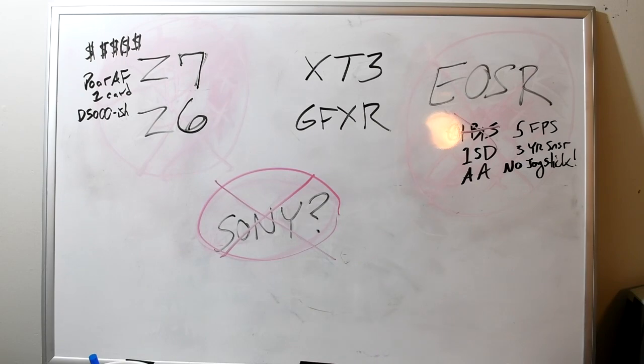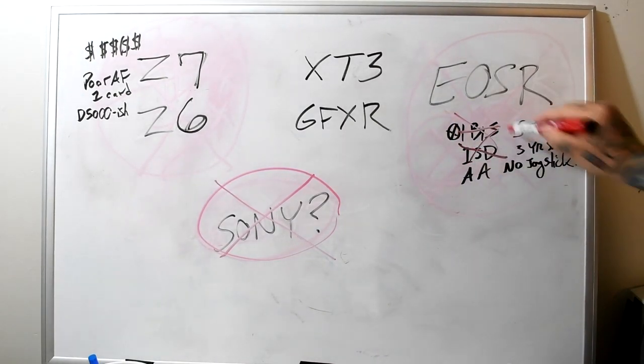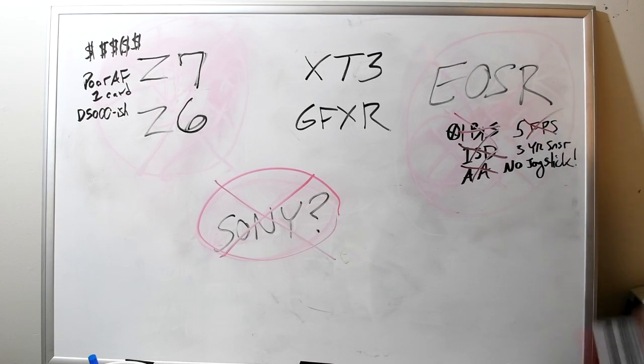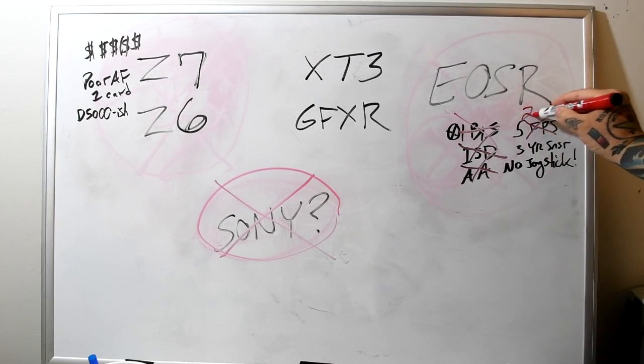Okay, only has one card slot, it has an anti-aliasing filter, five frames per second. It's actually got listed 2.2 frames per second in dual pixel mode.